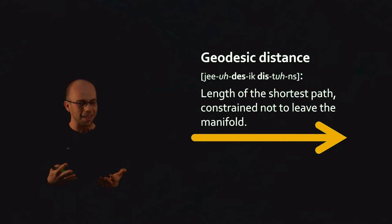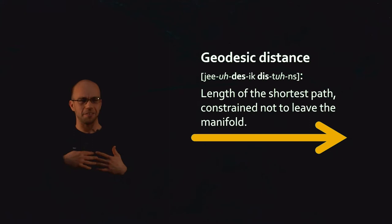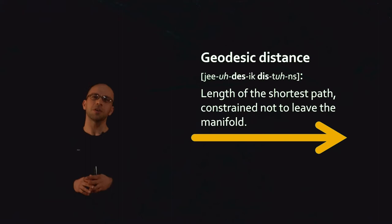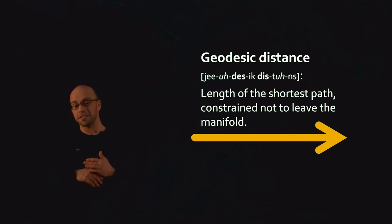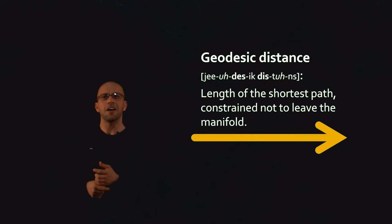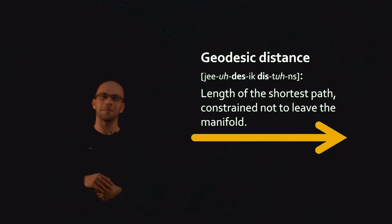Computing geodesic distance is one of the central problems in differential geometry — one of the most well-studied problems algorithmically, numerically, and theoretically. For those with a computer science background, this shouldn't be surprising. MIT's intro algorithms course, 6006, covers computing distances on graphs in great detail — Dijkstra's algorithm, Floyd-Warshall, Bellman-Ford, and more. In this class we're only going to afford two lectures, but you could easily fill several weeks with different approaches to this problem.